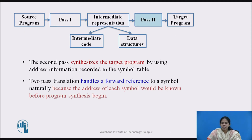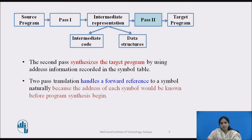The second pass synthesizes the target program by using the address information stored in the symbol table. In the two-pass assembler, it handles the forward reference to a symbol easily, because the address of each symbol is known before the program synthesis begins — the symbol table is built in pass one. So during pass two, when it generates the target code, it knows every symbol address.